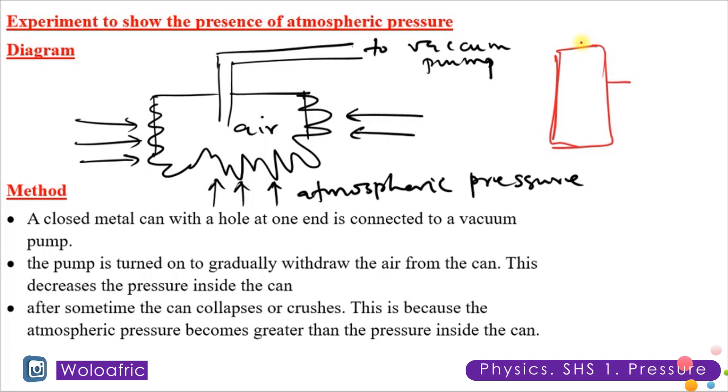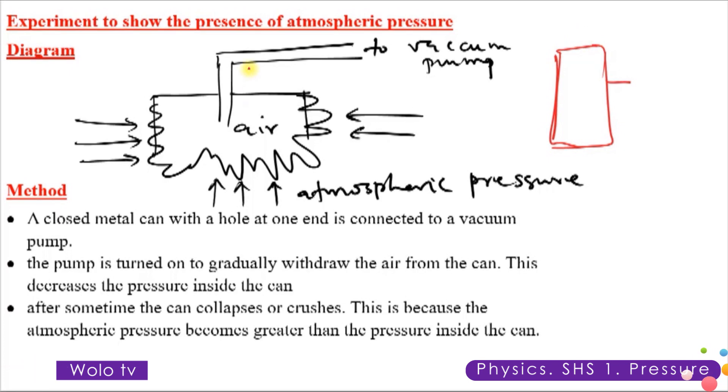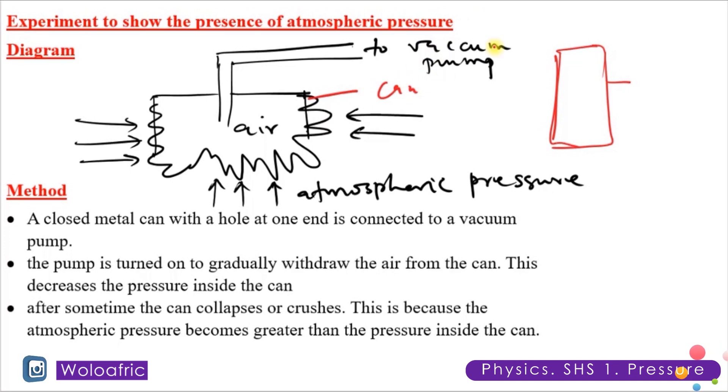How then do we know that atmospheric pressure is present? Let's look at the diagram on the screen. This is a can. We connect this can to a vacuum pump. What we are going to do is withdraw the air from the can.